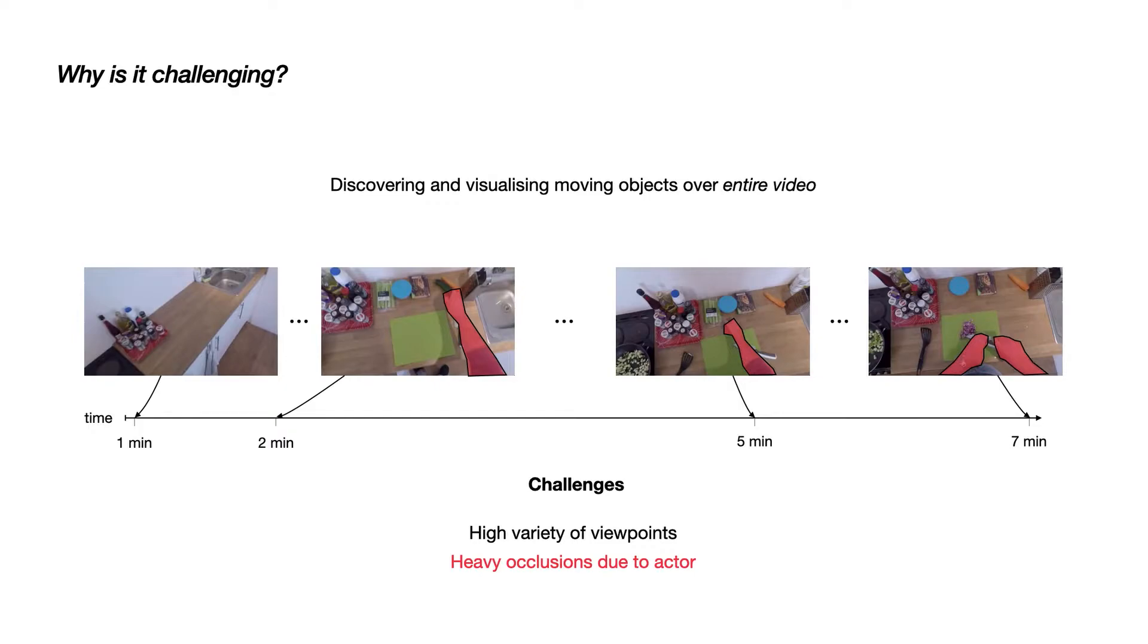Finally, the videos also contain many objects that rarely move over the video. For example, in this case we see a frame at the first minute of the video. After another minute we see objects that have appeared since then, and after 7 minutes some of these objects still were not moved.